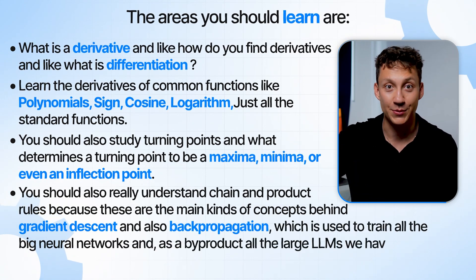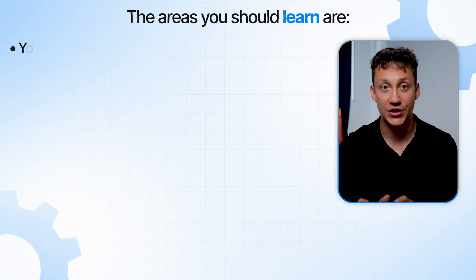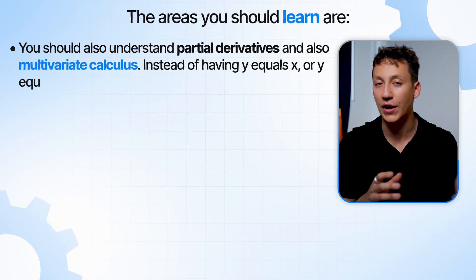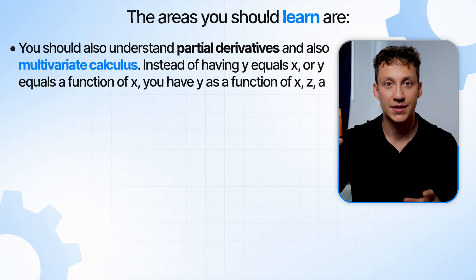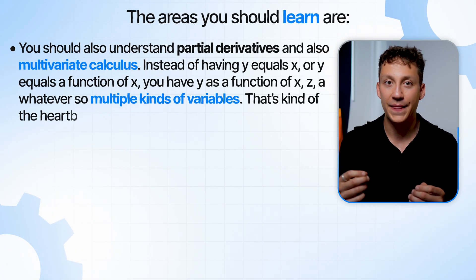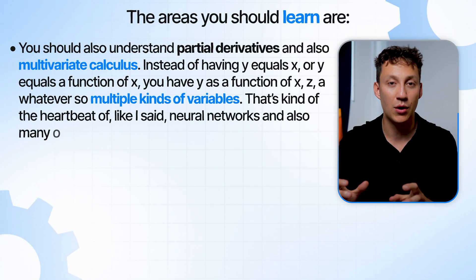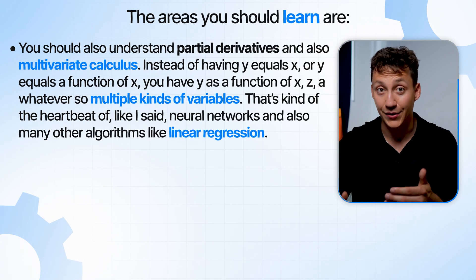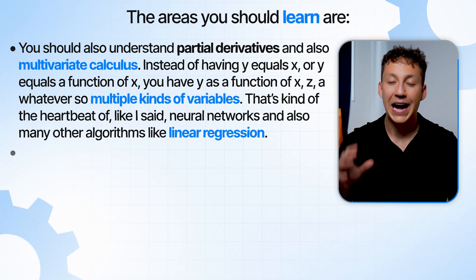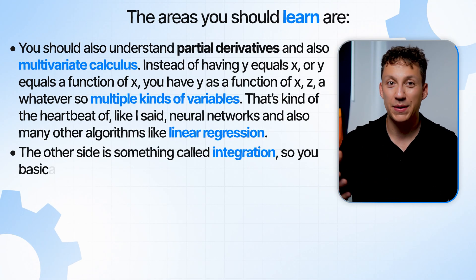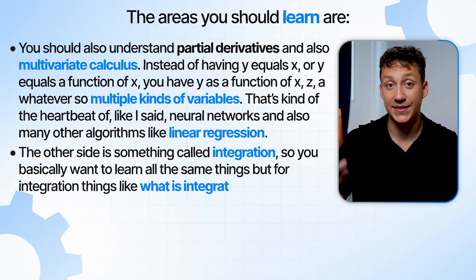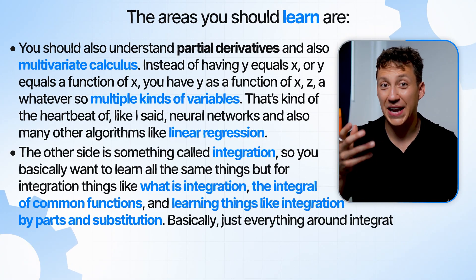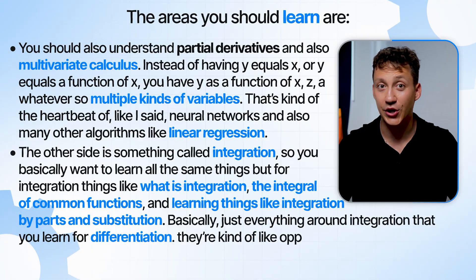For differentiation, you should also understand partial derivatives and multivariable calculus — where y is a function of multiple variables. That's the heartbeat of neural networks and algorithms like linear regression. The other side of calculus is integration. You want to learn all the same things for integration: what it is, the integral of common functions, integration by parts and substitution. Differentiation and integration are kind of opposites of each other.